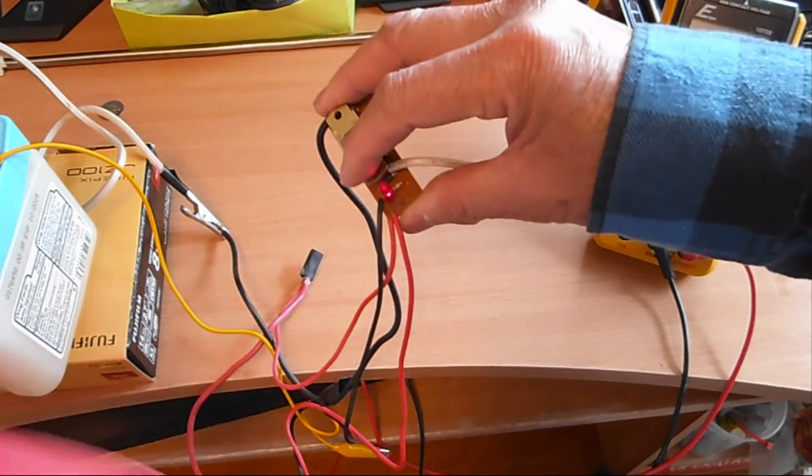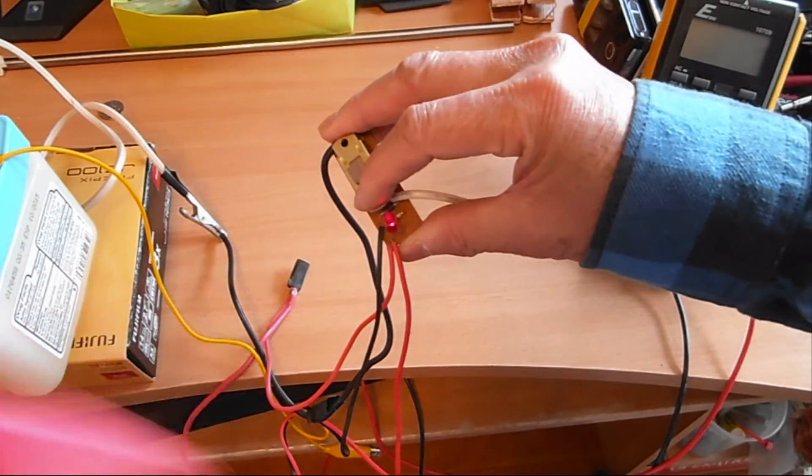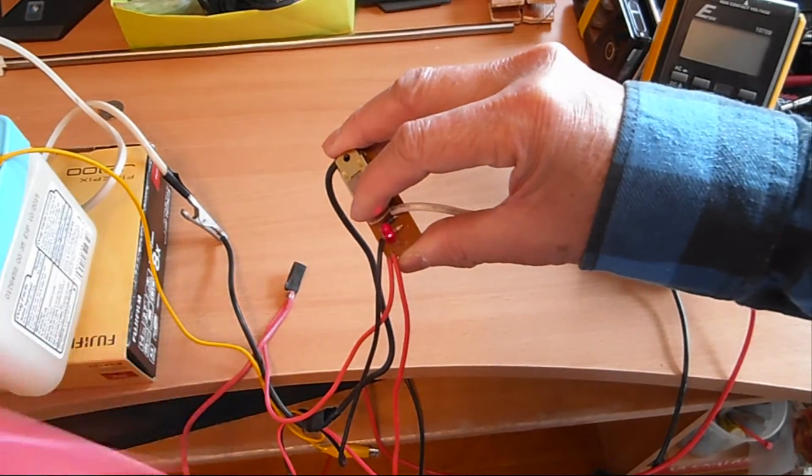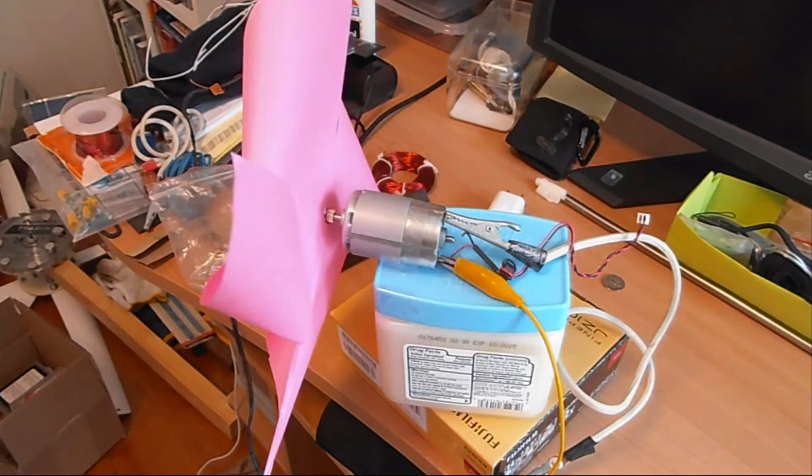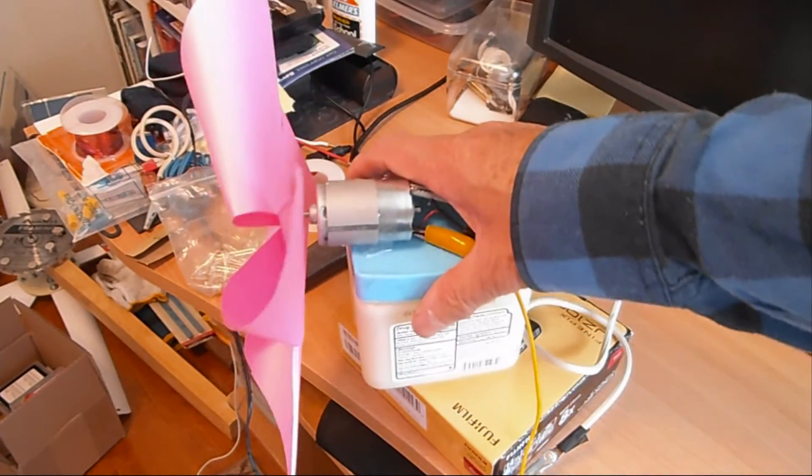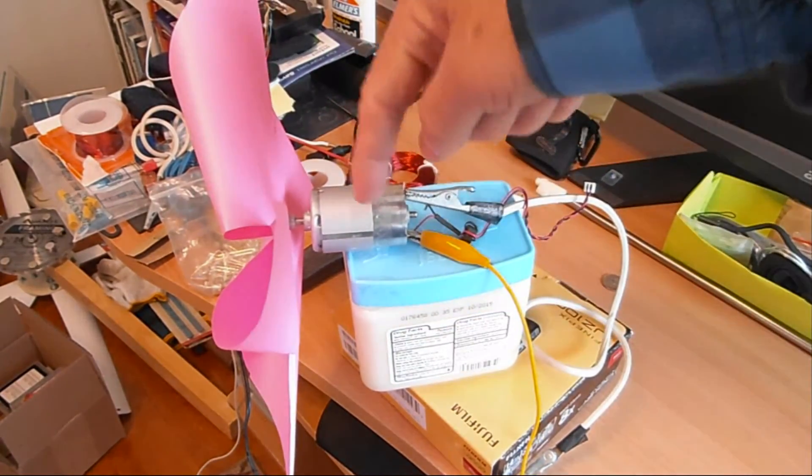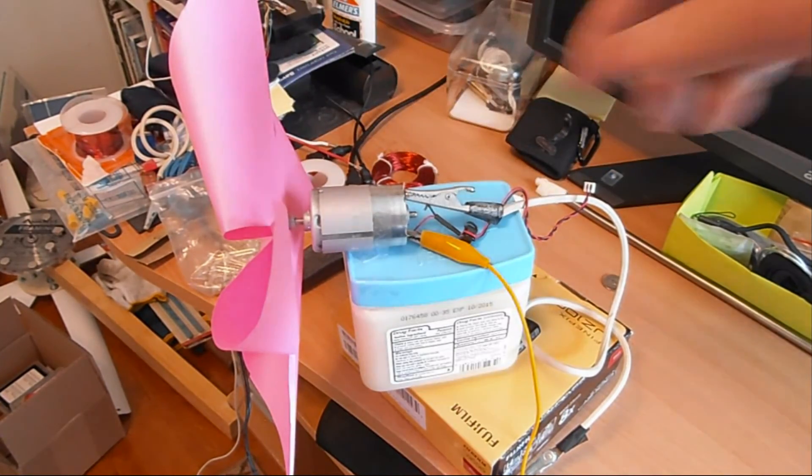Now it's running off just the charger itself, the 300ma charger. If you can get something to turn your blades and this is a different kind of motor charger, then this actually will become a generator.